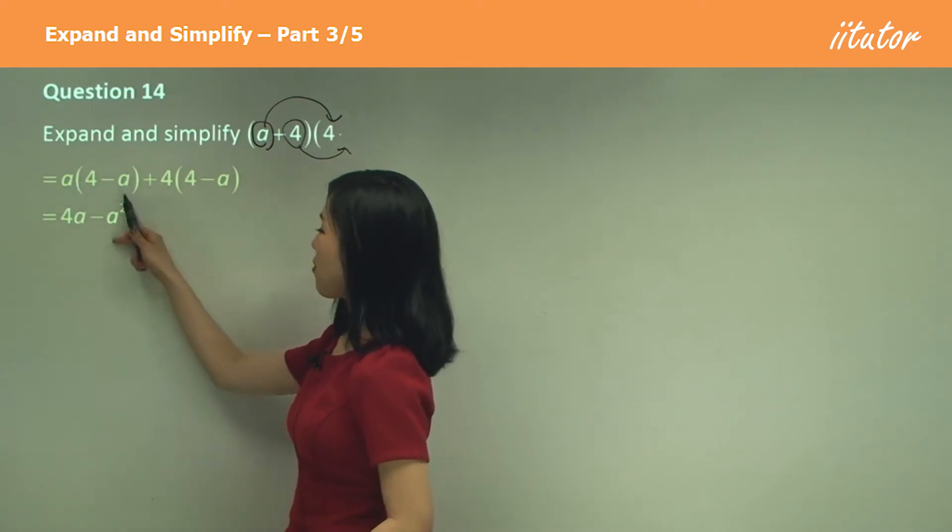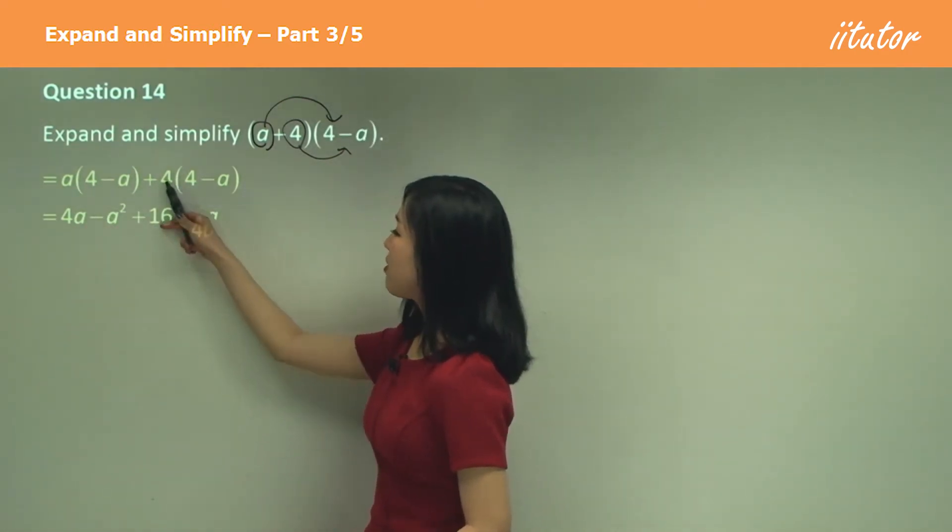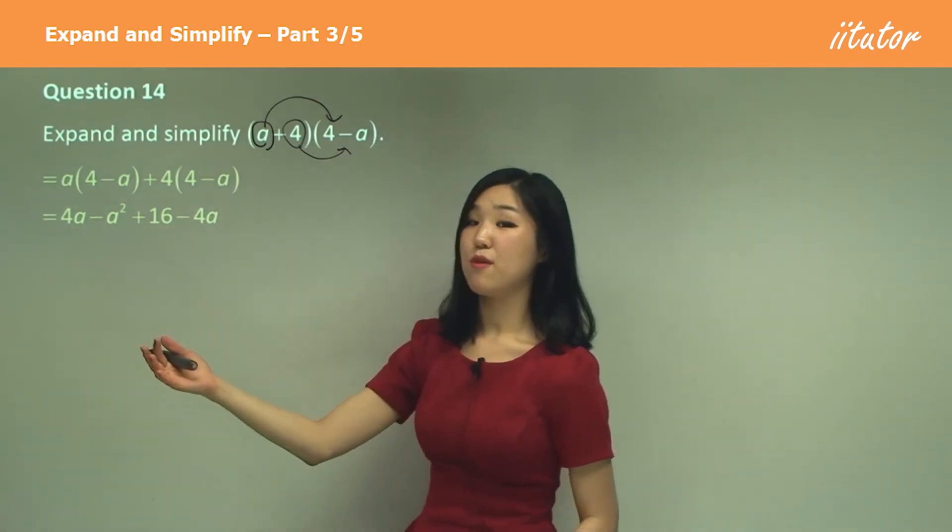A times 4 is 4a. That one is a squared, but negative. 4 times 4 is 16. 4 times negative a is negative 4a.